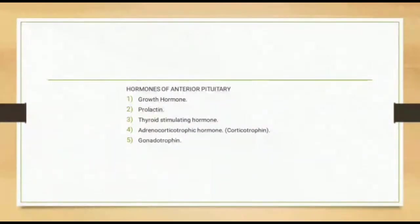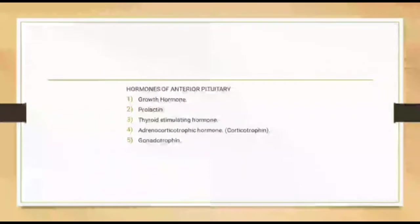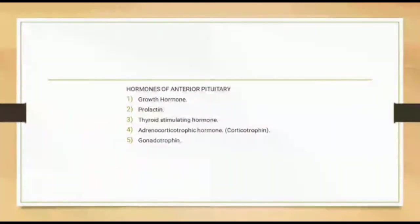The hormones of the anterior pituitary are: first, growth hormone; second, prolactin; third, thyroid stimulating hormone; fourth, adrenocorticotropic hormone, also known as corticotropin; and fifth, gonadotropins.